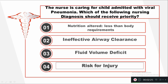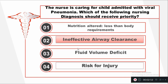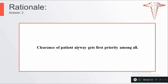Question number three: The nurse is caring for a child admitted with viral pneumonia. Which of the following nursing diagnoses should receive priority? Option one: Nutrition altered less than body requirements. Option two: Ineffective airway clearance. Option three: Fluid volume deficit. Option four: Risk for injury. The priority is ineffective airway clearance, because clearance of the patient's airway must be patent for the patient to survive.